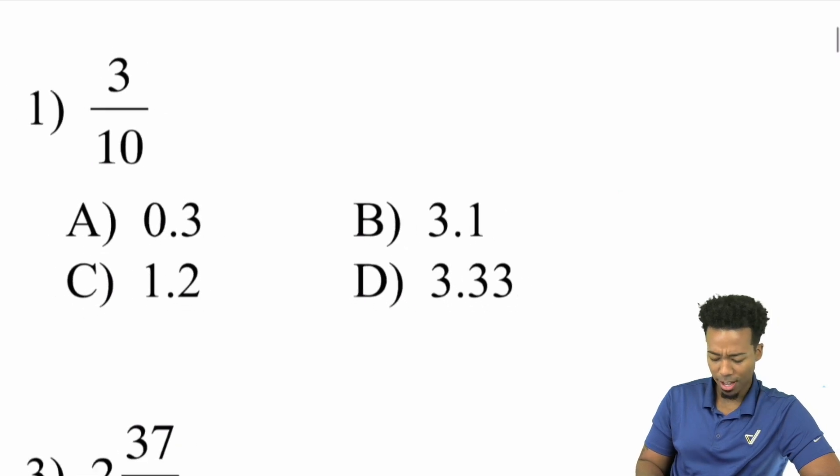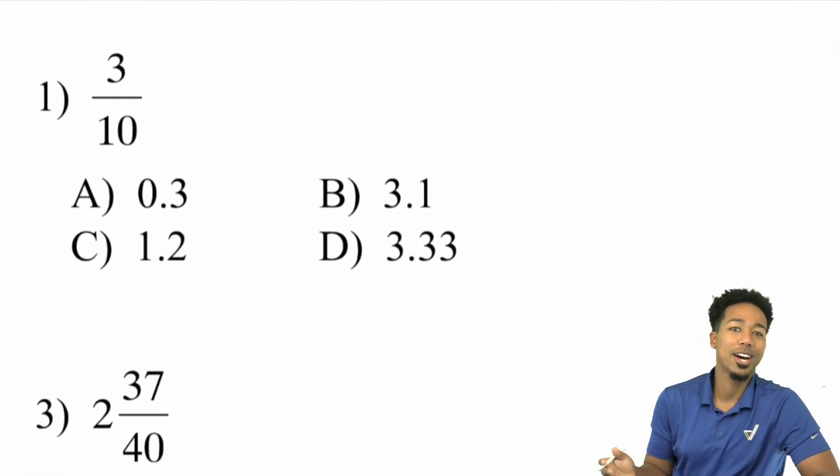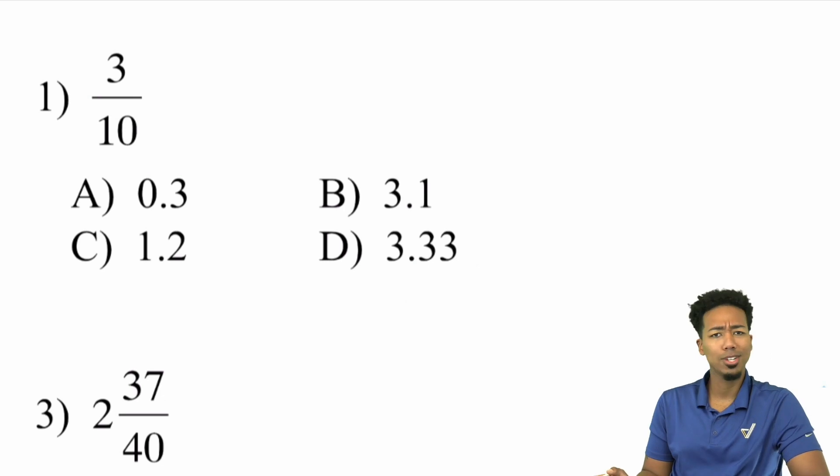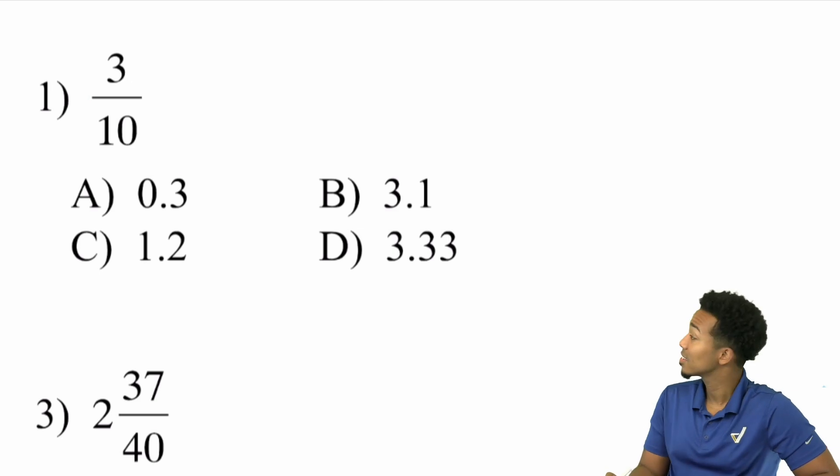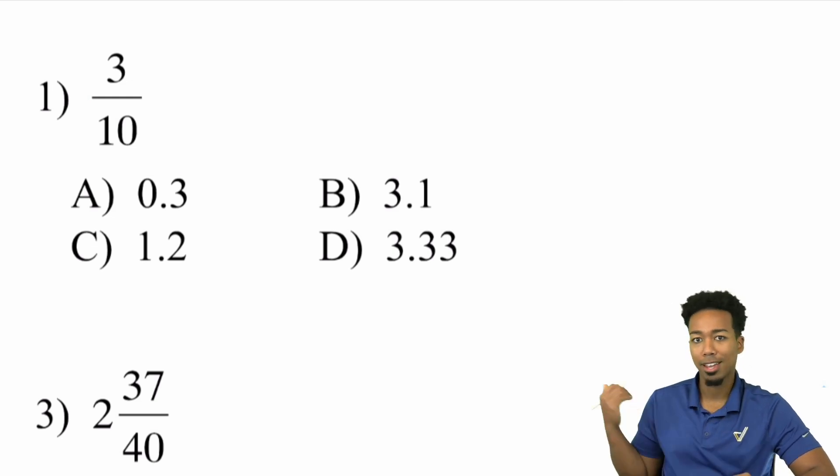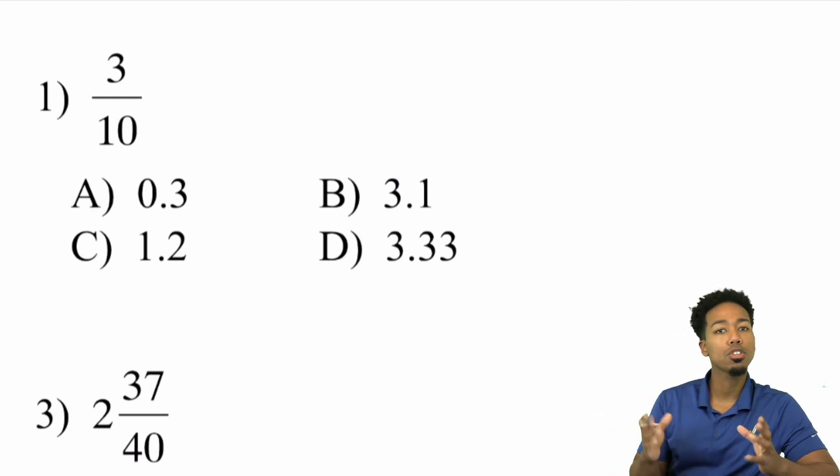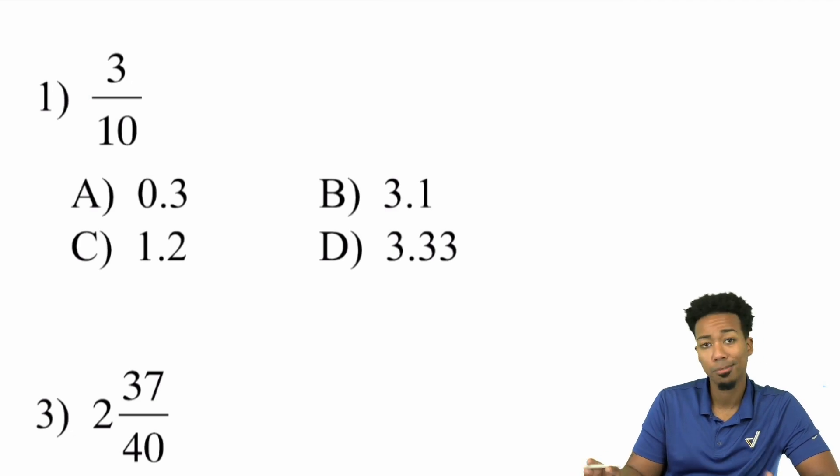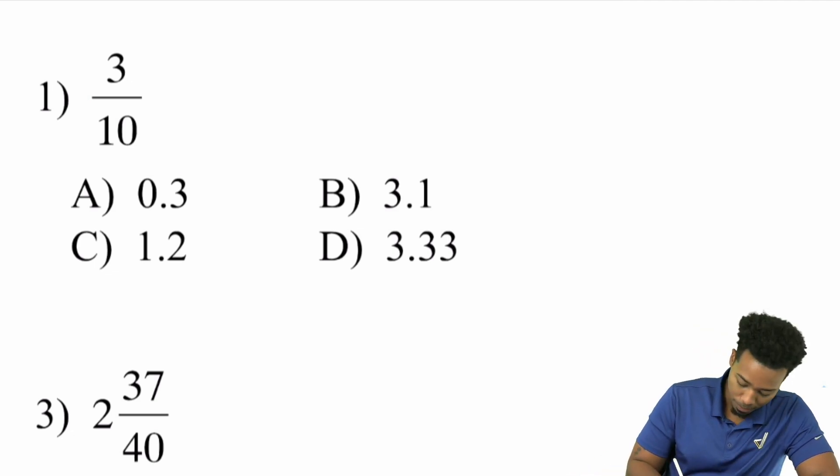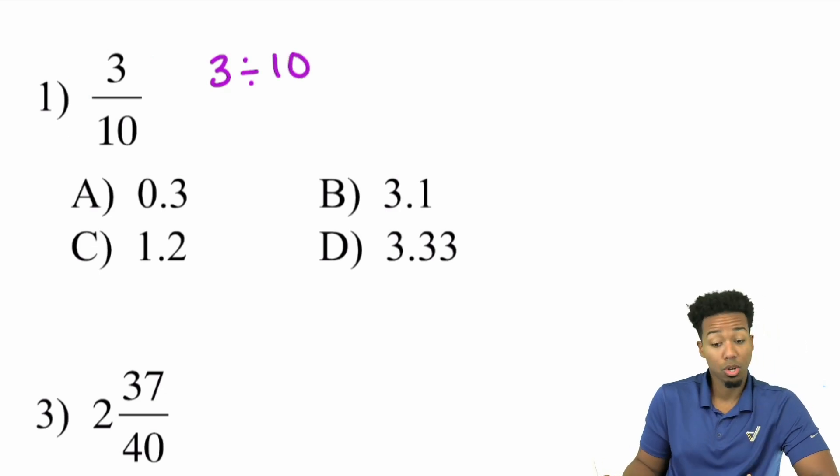How do you turn a fraction into a decimal? Well, here's how. Remember that fractions pretty much, they're just division. Fractions are just division. So when you see three tenths, really what you're seeing is three divided by 10. So there are little special rules for dividing by 10, dividing by five and things like that. But I'm going to show you the general way to get this done every single time.